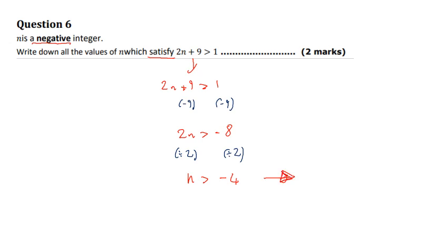it couldn't because n can't be equal to negative 4. But n could be negative 3, it could be negative 2, it could be negative 1. Could n be 0? No, because 0 is not negative. And so these are our final solutions.